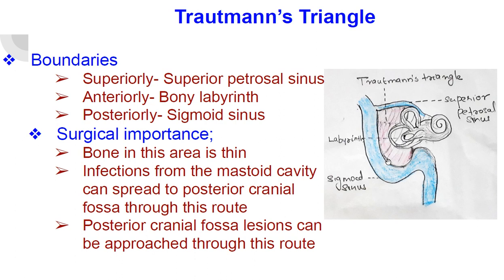Surgical Importance: Bone in this area is thin. Infections from the mastoid cavity can spread to the posterior cranial fossa through this route. Posterior cranial fossa lesions can be approached through this route.